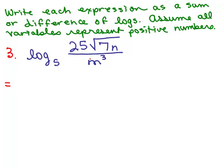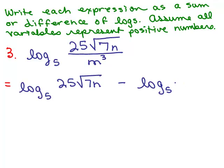So the first thing is I have a quotient. So again, I'm going to start off by writing it as a difference, the log of the numerator minus the log of the bottom, the denominator. So I have the log base 5 of 25 square roots of 7n minus the log of m cubed. The trick in math is always breaking things up into smaller little pieces.